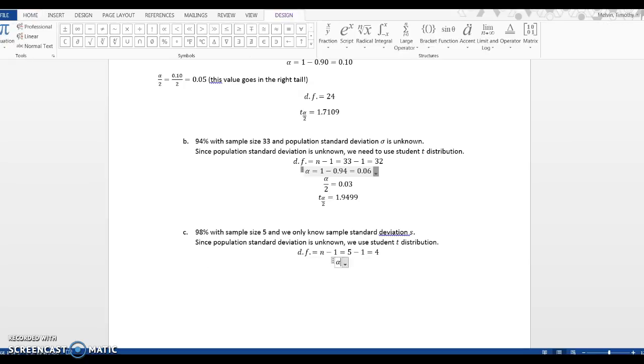We have alpha is always 1 minus confidence level, 0.98, so that's 0.02. Then we have alpha over 2 is going to be half of this, 0.01.